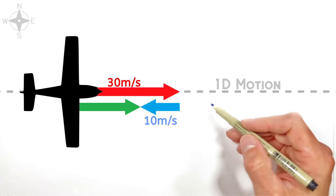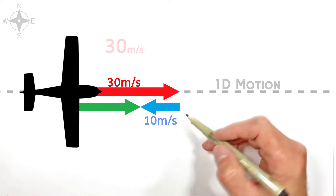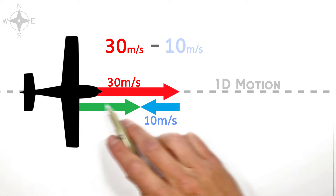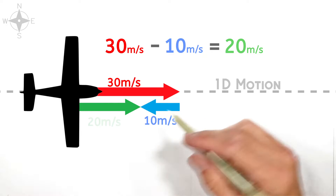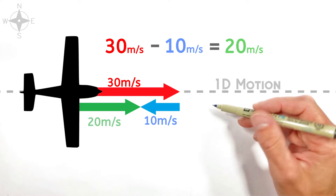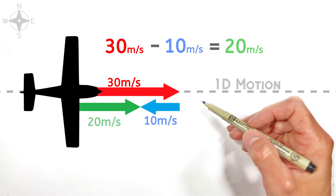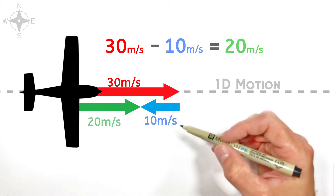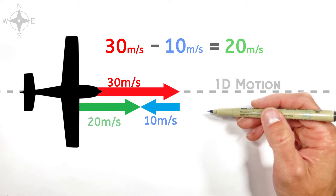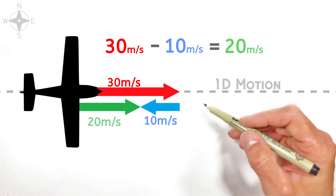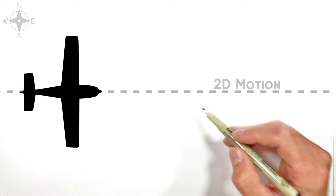What happens in one-dimensional vector addition is if you just say to the right is positive and the left is negative, it's not too hard to see the plane trying to go 30 meters per second to the right is going to get pushed back to the left by the wind, so it's only moving at 20 meters per second. The misconception here is people think that vector addition is really just adding together numbers, no different than when you were six years old. But it's not, and it's not until you get into two-dimensional vector addition that this misconception pops up.